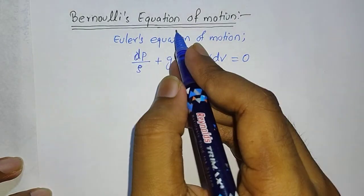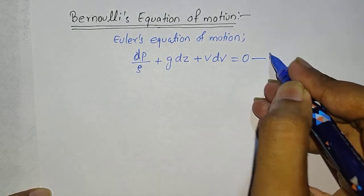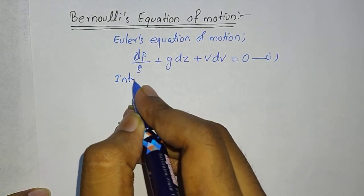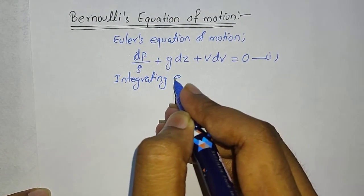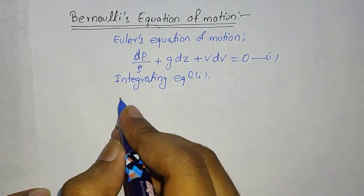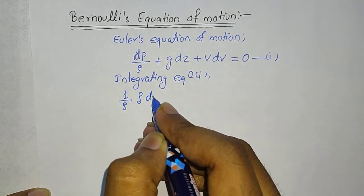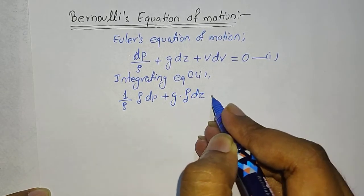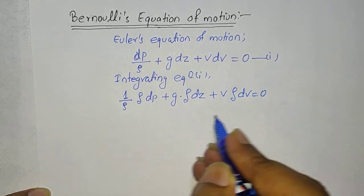For the derivation of Bernoulli's equation we need to integrate this equation. Suppose this is our equation 1. Now integrating equation 1, it can be written as: (1/ρ)∫dp + g·∫dz + ∫V·dV = 0.